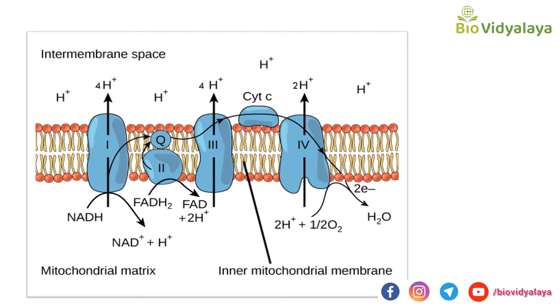Now let's see how electrons are transported through the electron transport chain. Here you can see the inner membrane, the intermembrane space (the space between the outer and inner membrane), and the matrix. In the matrix, the high-energy electron carriers NADH and FADH2 are present, coming from the TCA cycle. You can see Complex 1, coenzyme Q, Complex 2, Complex 3, Complex 4, and the mobile electron carriers coenzyme Q and cytochrome C.